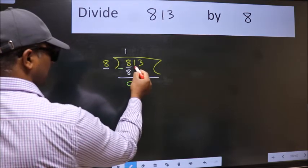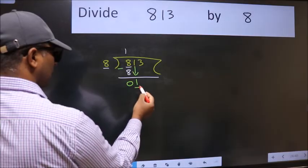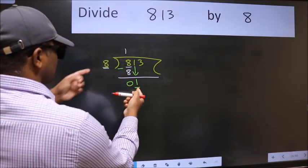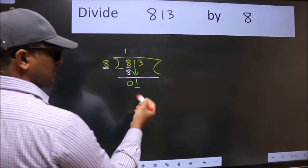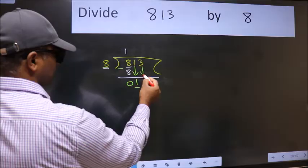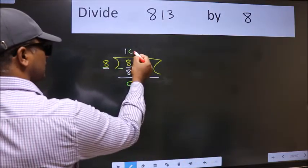After this, bring down the next number. So, 1 down. Now, here we have 1 and here 8. 1 is smaller than 8, so we should bring down the second number. And the rule to bring down the second number is to put 0 here.